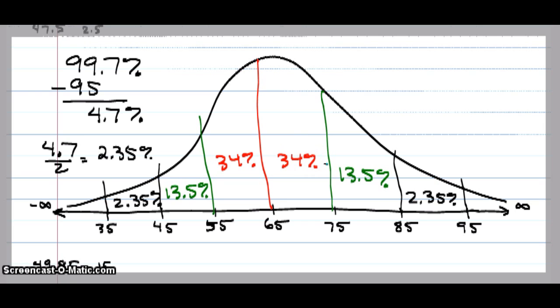A hundred percent lies under the curve. 100 minus 99.7% leaves me with 0.3% in each of these tails going out to negative and positive infinity.